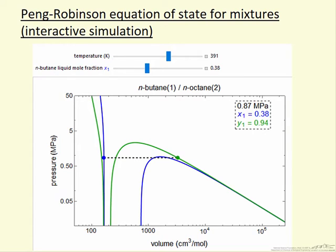This interactive simulation uses the Peng-Robinson equation of state to calculate pressure-volume isotherms, and what is shown are two isotherms.